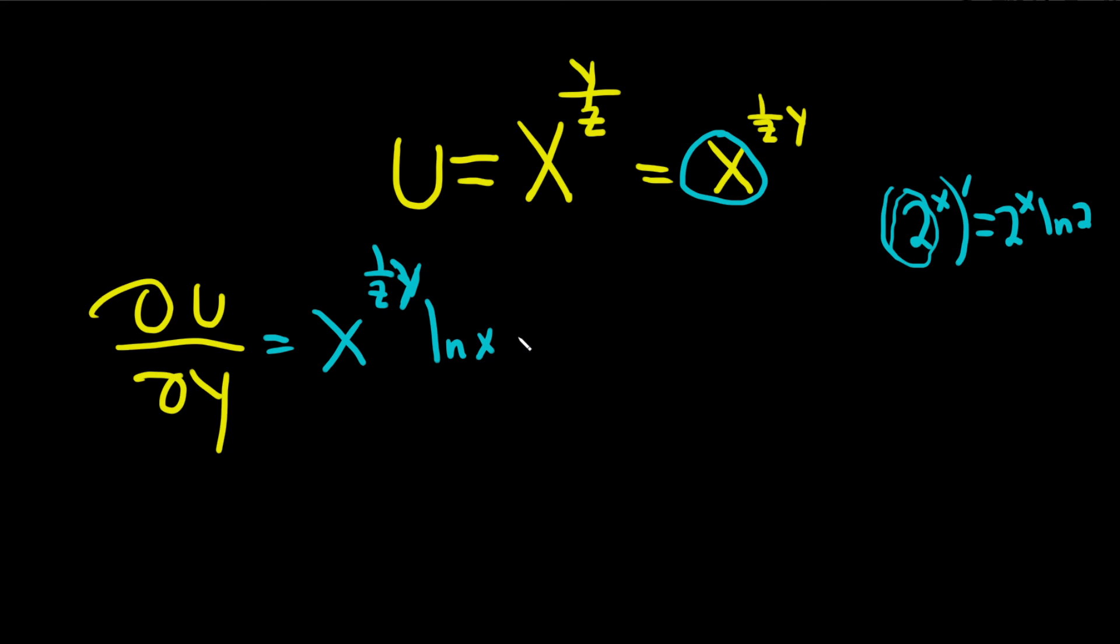Well, the derivative of y is 1, so you just get 1 over z. And that would be the final answer. You could write it maybe as x to the y over z, ln x, and then all divided by z. I hope this video has been helpful.